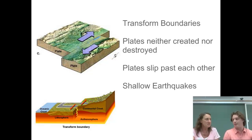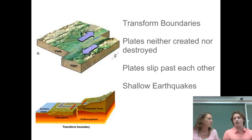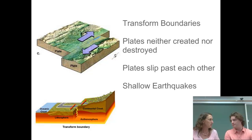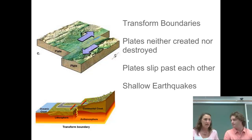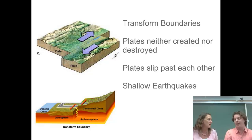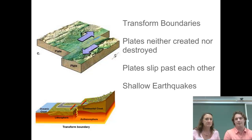They don't slide continuously. They get stuck, they jump. And when those kinds of things happen, that's when we see huge earthquakes — or at least the potential for huge earthquakes. These earthquakes tend to be shallow, where the earthquakes associated with convergent plate boundaries can be very deep. Because these earthquakes are shallow, the crust is really brittle and it breaks and rebounds a lot, causing often a lot of damage. The earthquakes are really dramatic at these types of plate boundaries.